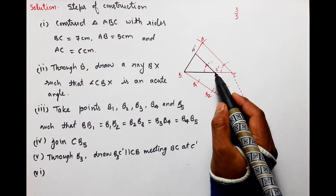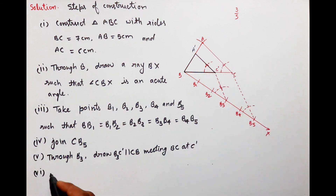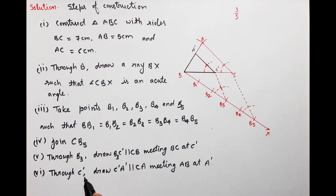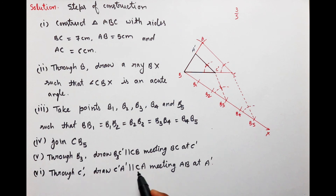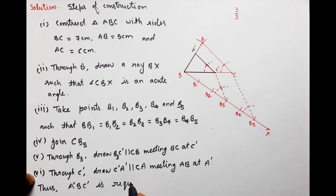इसके बाद बच्चों, हमने C dash से AC के parallel एक line draw की — through C dash, draw C dash A dash parallel to CA, meeting AB at A dash. Thus, triangle A dash B C dash is the required triangle.